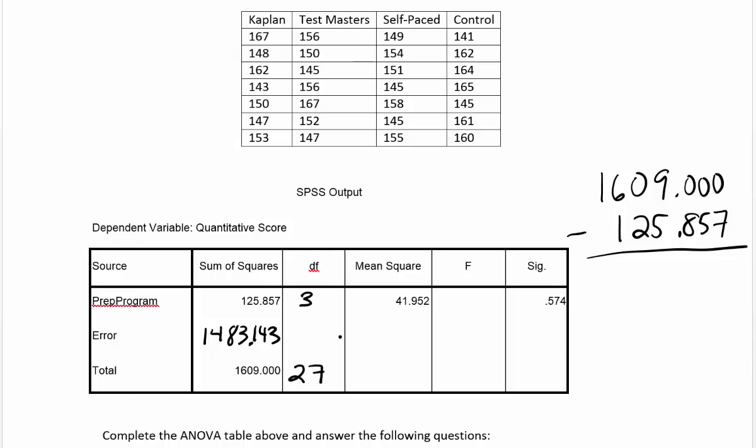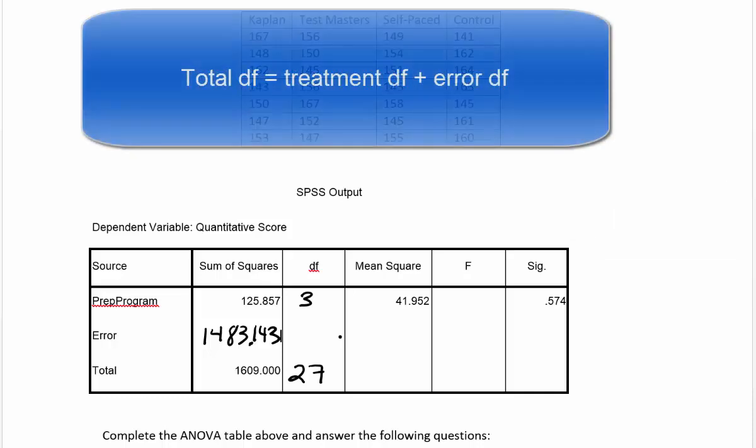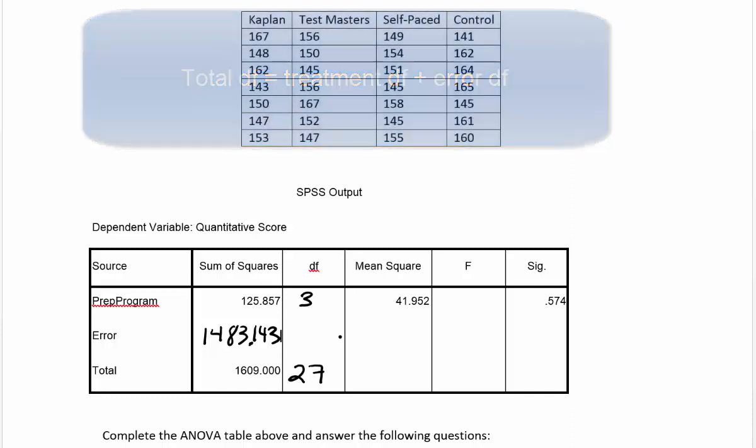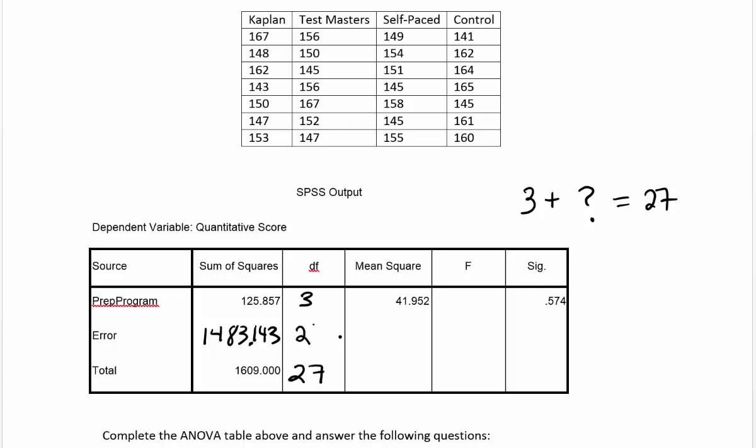We just need to figure out the error degrees of freedom. The error degrees of freedom works just like the sum of squares, in that we can get the answer by using subtraction. The total degrees of freedom is derived by saying the degrees of freedom for treatments plus error equals the total degrees of freedom. That means we're looking for 3 plus some unknown quantity equals 27. The answer must be 24.